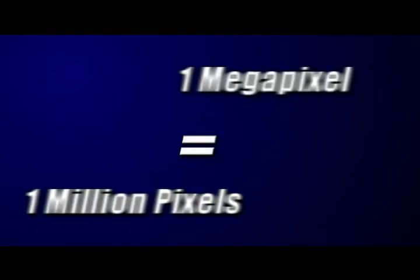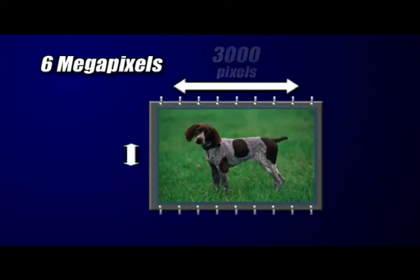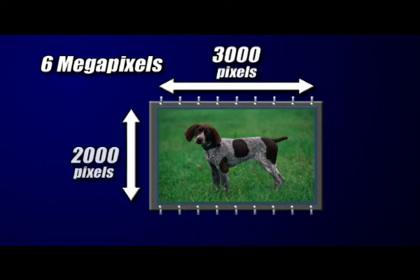A megapixel is equal to one million pixels. So a six megapixel camera is capable of taking photos with six million pixels.